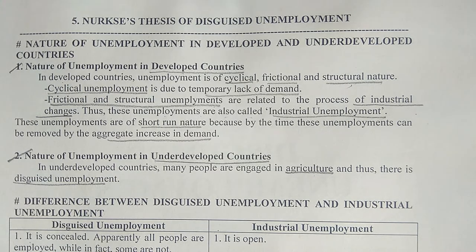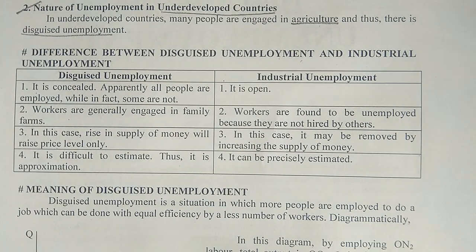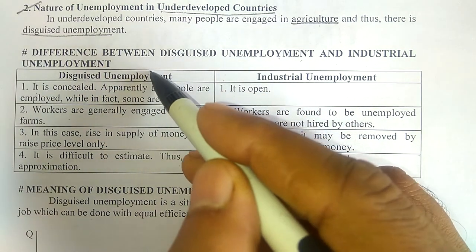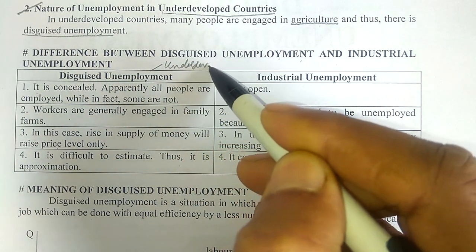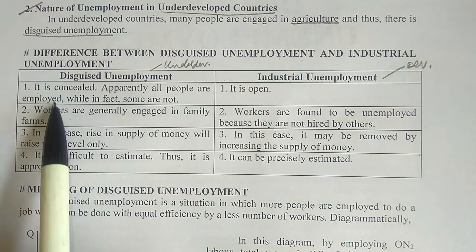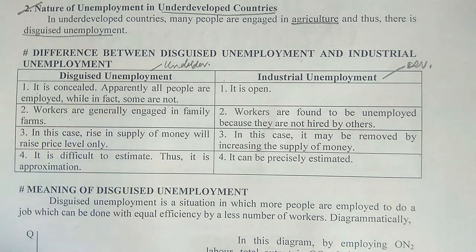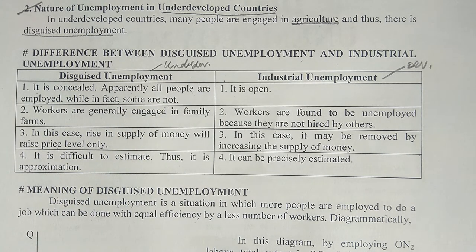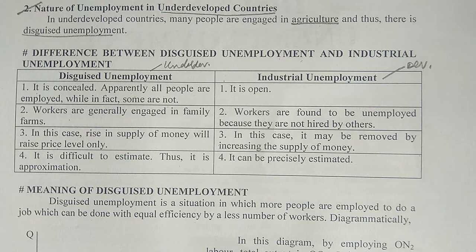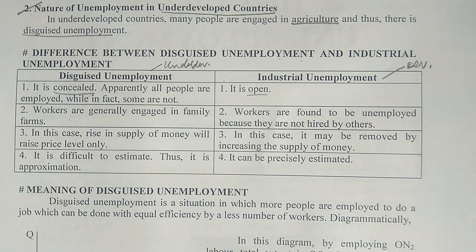What is the difference between disguised unemployment and industrial unemployment? Disguised unemployment exists in underdeveloped countries, while industrial unemployment is in developed countries. Disguised unemployment is concealed — apparently all people are employed while in fact some are not. In industrial sectors, if there is unemployment, it is open and visible. So disguised unemployment is concealed, while industrial unemployment is open.